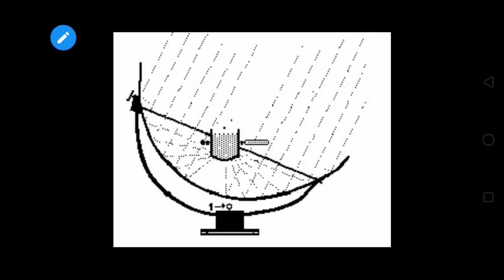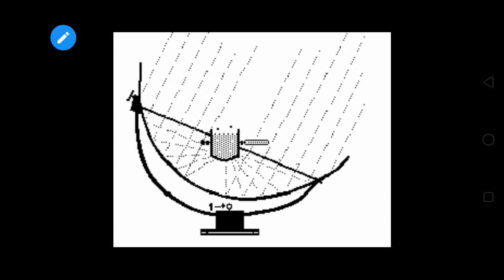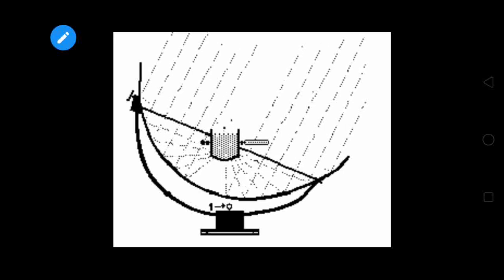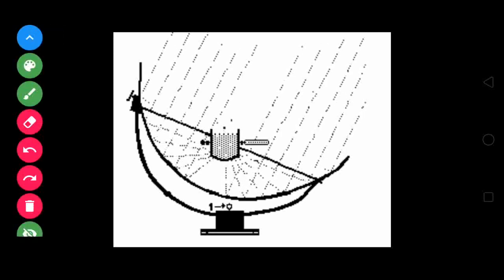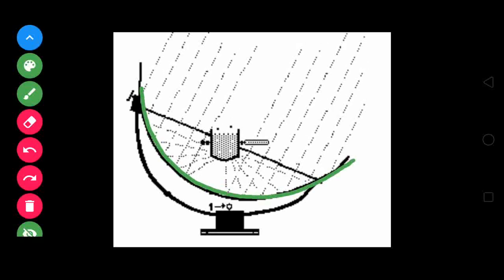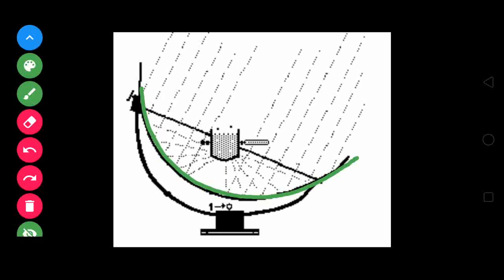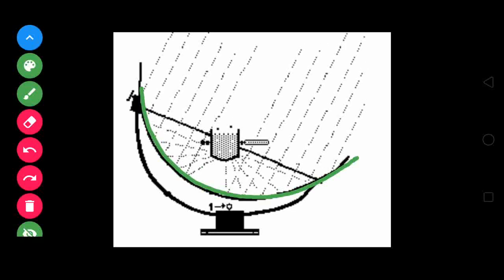In this parabolic reflector, the collection of solar radiations are from a larger area. Solar radiations are collected from a larger area. This has got a very large area, and within this area we collect the solar radiations.